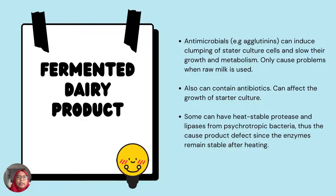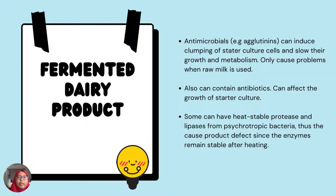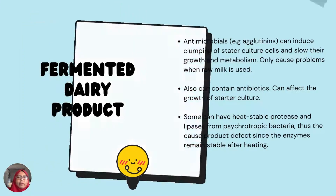That is why we usually use pasteurized milk. Milk can also contain antibiotics that can affect the growth of starter cultures. Some milk can have heat-stable proteases and lipases from psychrotrophic bacteria, which cause product defects since the enzymes remain stable after heating.